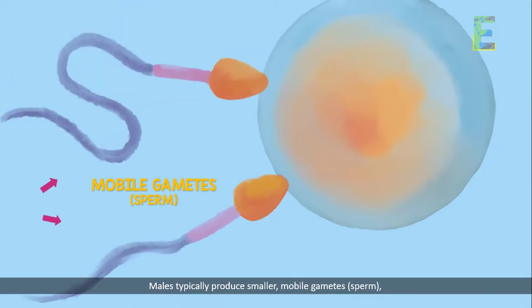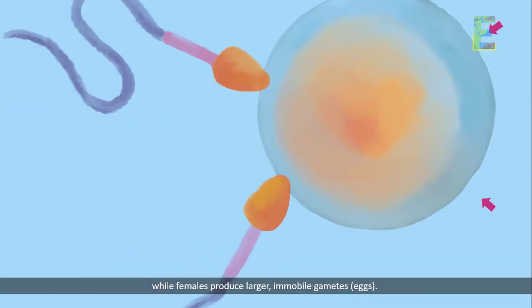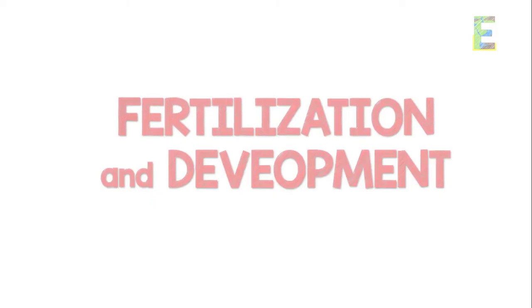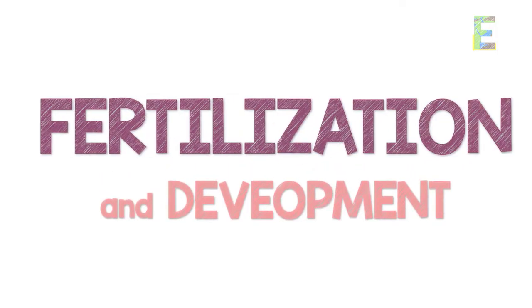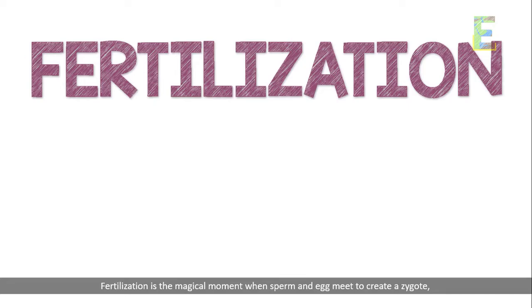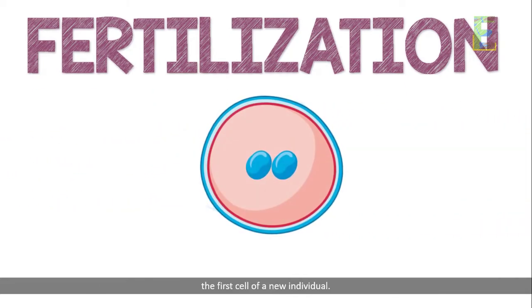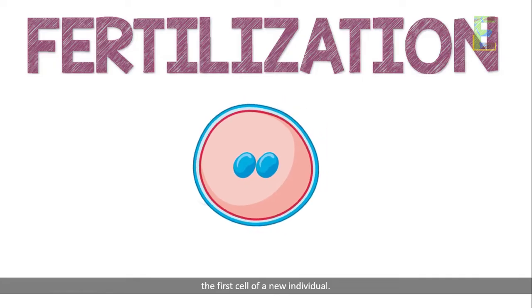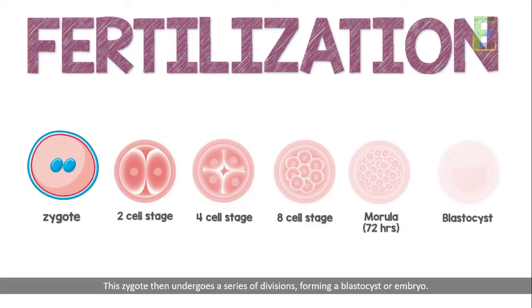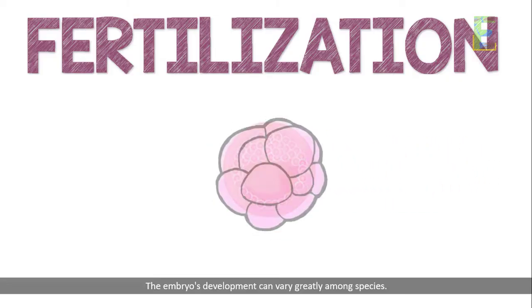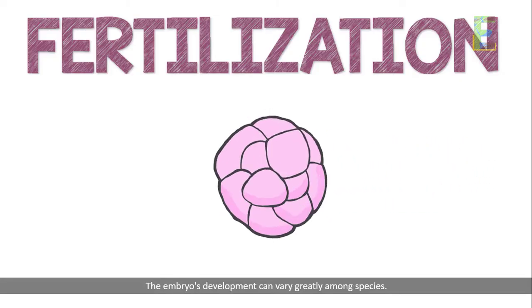In most sexually reproducing animals, we have distinct male and female reproductive systems. Males typically produce smaller, mobile gametes — sperm — while females produce larger, immobile gametes — eggs. Fertilization is the moment when sperm and egg meet to create a zygote, the first cell of a new individual. This zygote then undergoes a series of divisions, forming a blastocyst or embryo.